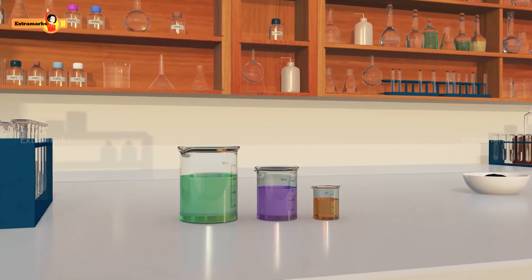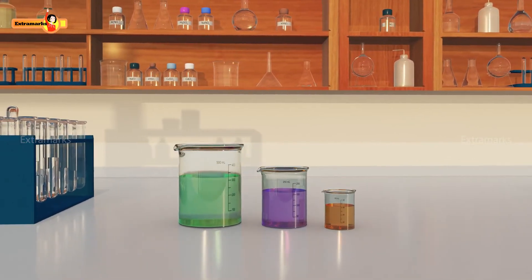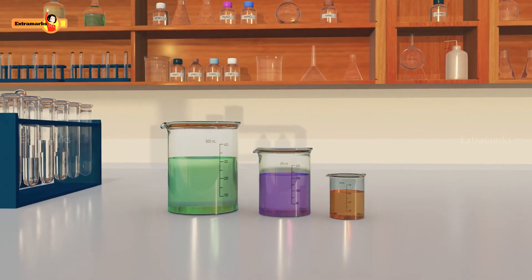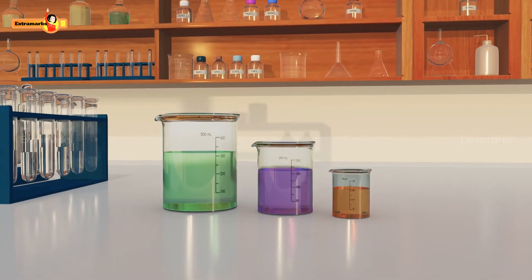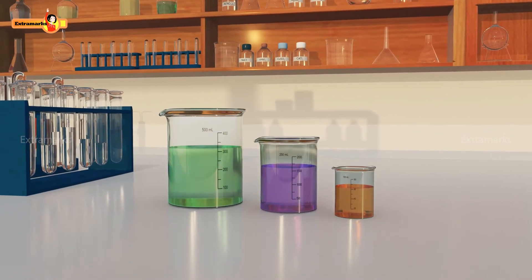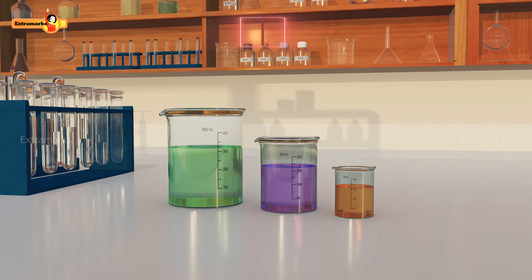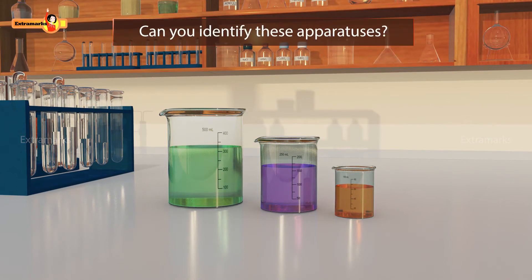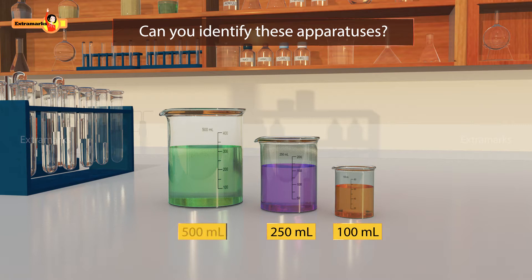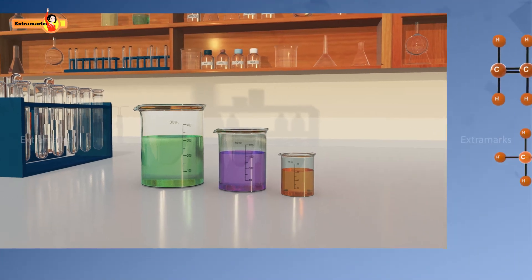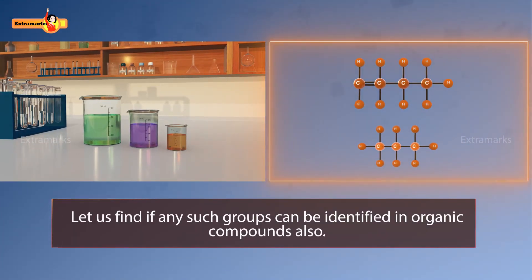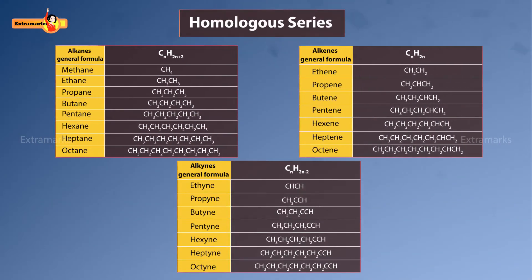Different apparatuses are used in chemistry laboratories for carrying out various experiments. Here you can see different solutions kept in apparatuses which have similar shape but different capacities — these are beakers of different capacities like 100 mL, 250 mL, 500 mL, etc. We can call them a group of beakers. Let us find if any such groups can be identified in organic compounds also.